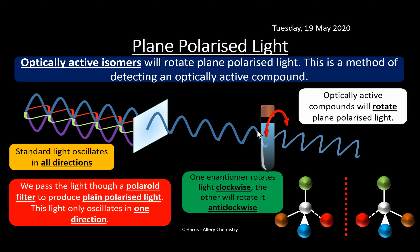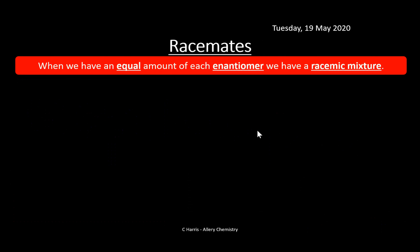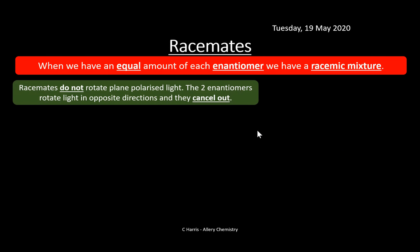When we have an equal amount of each enantiomer, we get a racemate — a racemic mixture — which is a 50:50 mix of each enantiomer. Racemates do not rotate plane polarized light because both enantiomers rotate in opposite directions and the net effect is zero. Be really careful with this in the exam: just because a sample doesn't rotate plane polarized light doesn't mean it has no chiral center — it might just be a 50:50 mix of each enantiomer forming a racemate.